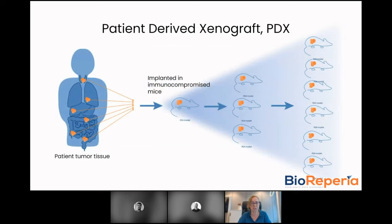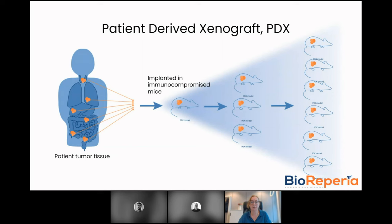PDX models are derived from tumour tissues harvested from donor patients. The tissues are then implanted into immunocompromised mice and expanded from mice to mice, making them available for patient studies over a longer period of time. Since PDX models are derived directly from patient tumours and have not been grown in plastics or as cultured cells, they can reflect the heterogeneity of the human tumour and directly reflect what is experienced in the clinic, making them an important part of translational oncology research.